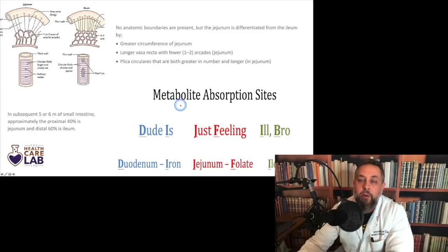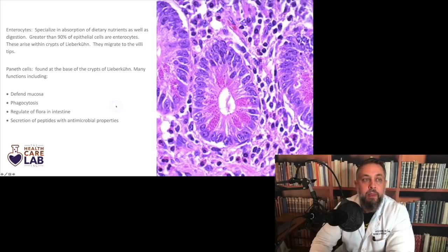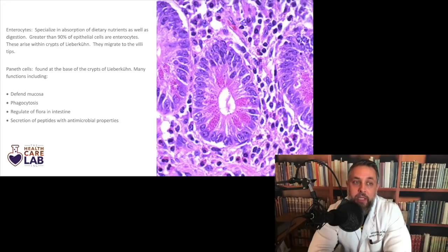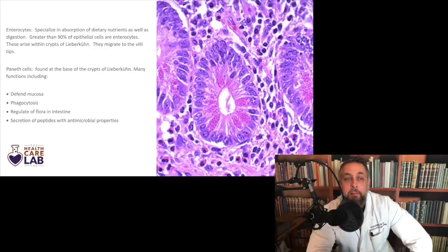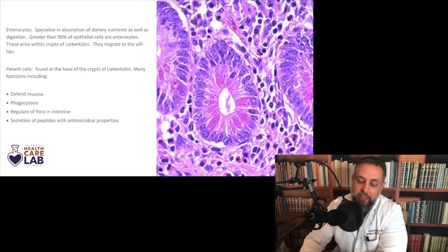There's a mnemonic for remembering key metabolite absorption sites: 'Dude is just feeling ill, bro.' The duodenum absorbs iron, the jejunum absorbs folate, and the ileum absorbs B12. Greater than 90% of the epithelial cells in the small bowel are enterocytes, which come up within the crypts of Lieberkühn and migrate to the villi tips. Paneth cells are found at the base of the crypts of Lieberkühn; they defend the mucosa, demonstrate phagocytosis, regulate flora, and secrete peptides with antimicrobial properties.